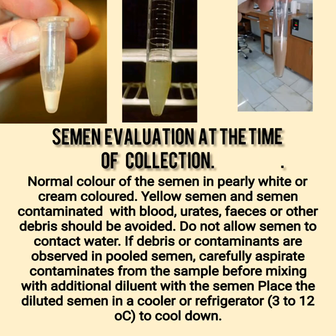Normal color of the semen is pearly white or cream colored. Yellow semen and semen contaminated with blood, urates, feces, or other debris should be avoided. Do not allow semen to contact water. If debris or contaminants are observed in pooled semen, carefully aspirate contaminants from the sample before mixing with additional diluent. Then place the diluted semen in a cooler or refrigerator at 3 to 12 degrees Celsius to cool down.